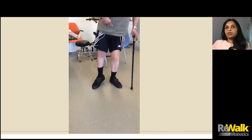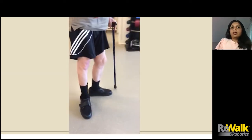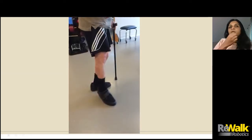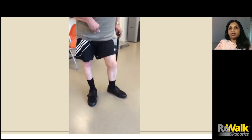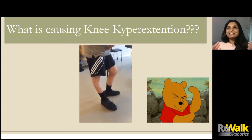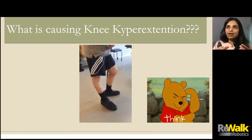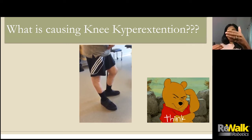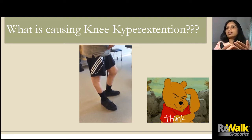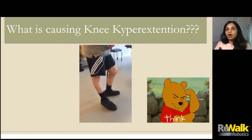Looking at this next video, knee hyperextension happened during the mid-stance phase of the gait cycle. When we see knee hyperextension, our focus is on the knee — which I'm not saying is wrong. But if we look at what should be happening at the ankle, at the knee, and at the hip and trunk, everything could be a contributor to this person having knee hyperextension. For him, the knee hyperextension is a lot — almost up to 15 to 20 degrees.